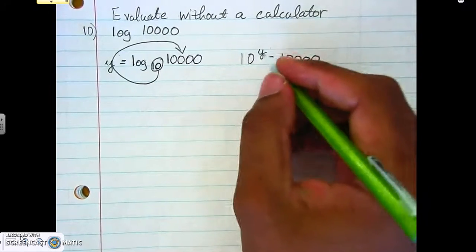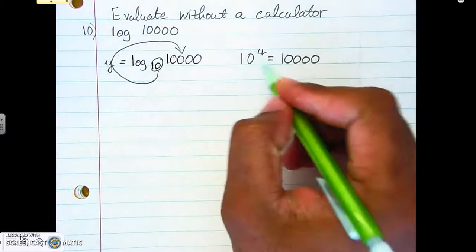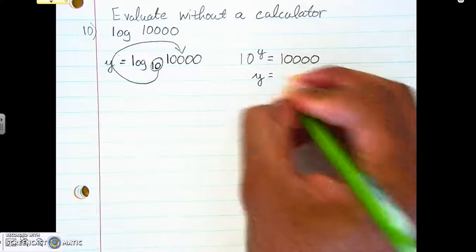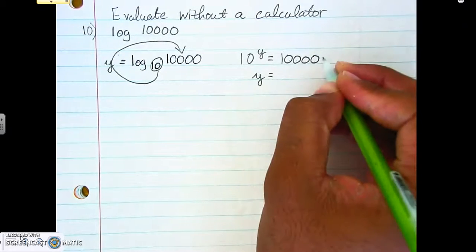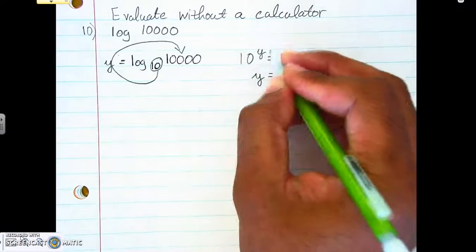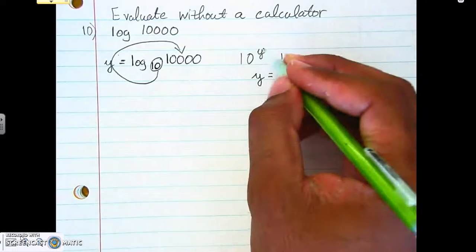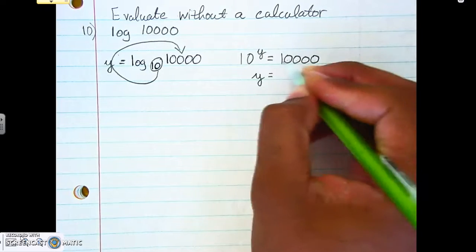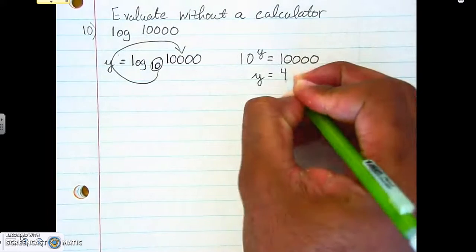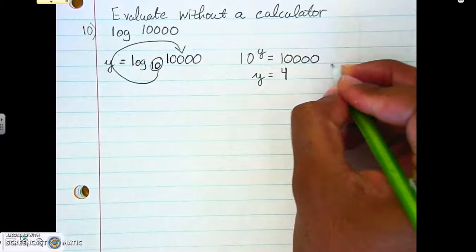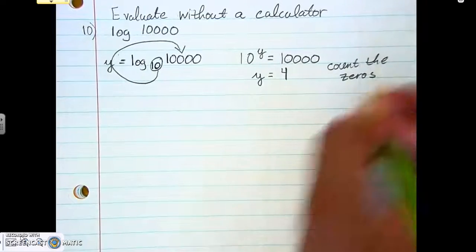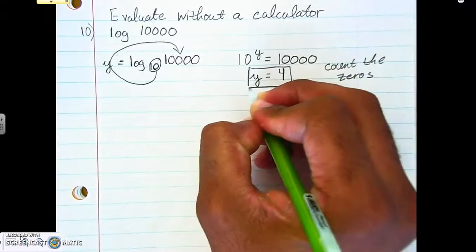Now with this, and hopefully everybody knows this already, but whenever you're dealing with 10 to some power and they give you this number here with all the zeros, to figure out what y is equal to, all you do is just count how many zeros there are. So there's four zeros here, it means it's going to be 10 to the fourth power. There are five zeros here, that'd be 10 to the fifth power. All you do is just count the zeros. That's it, so the answer is four, y equals 4.